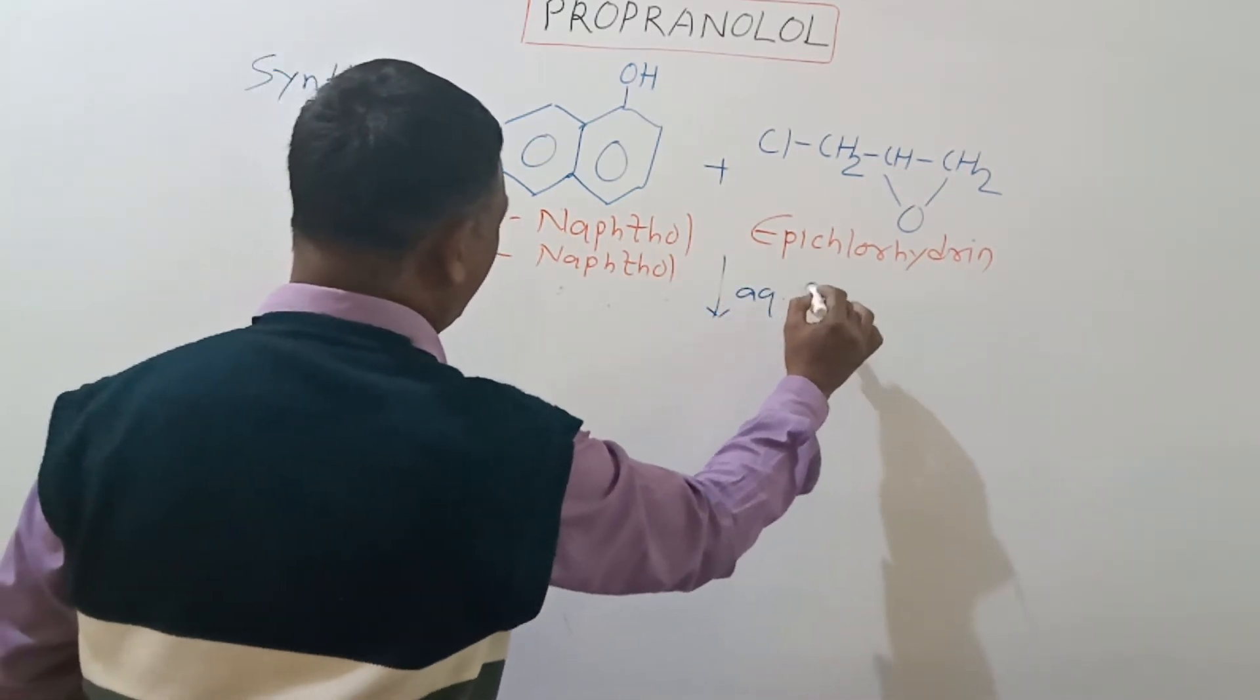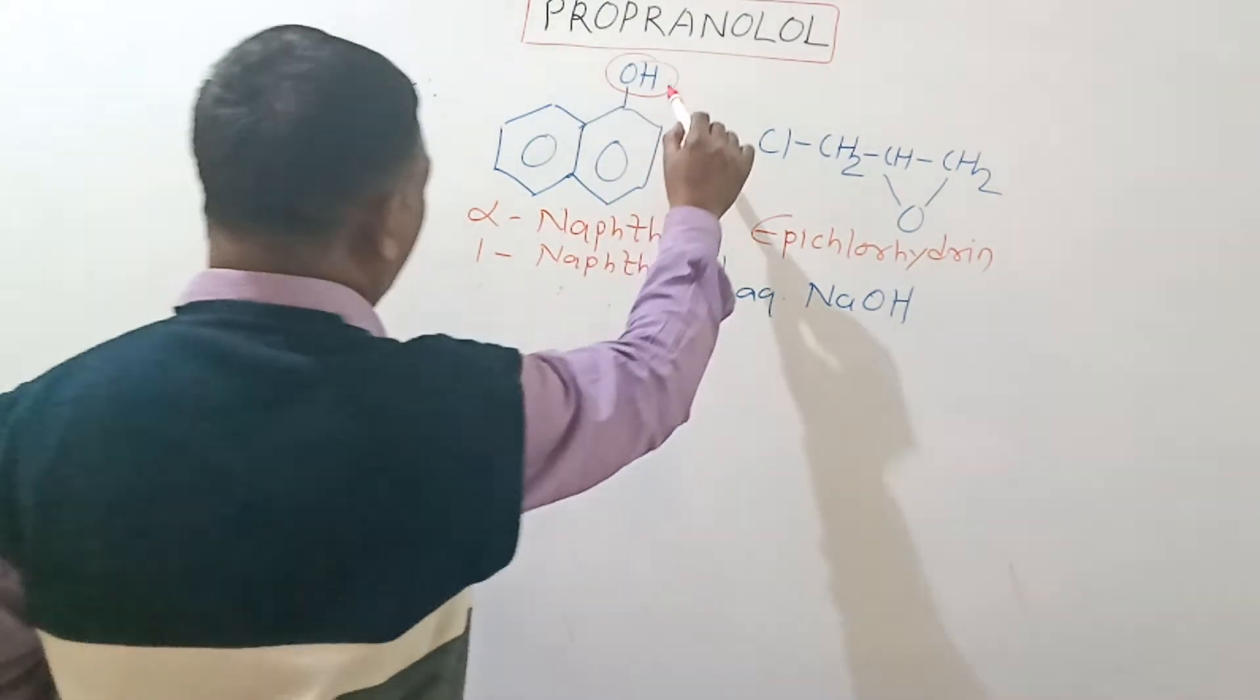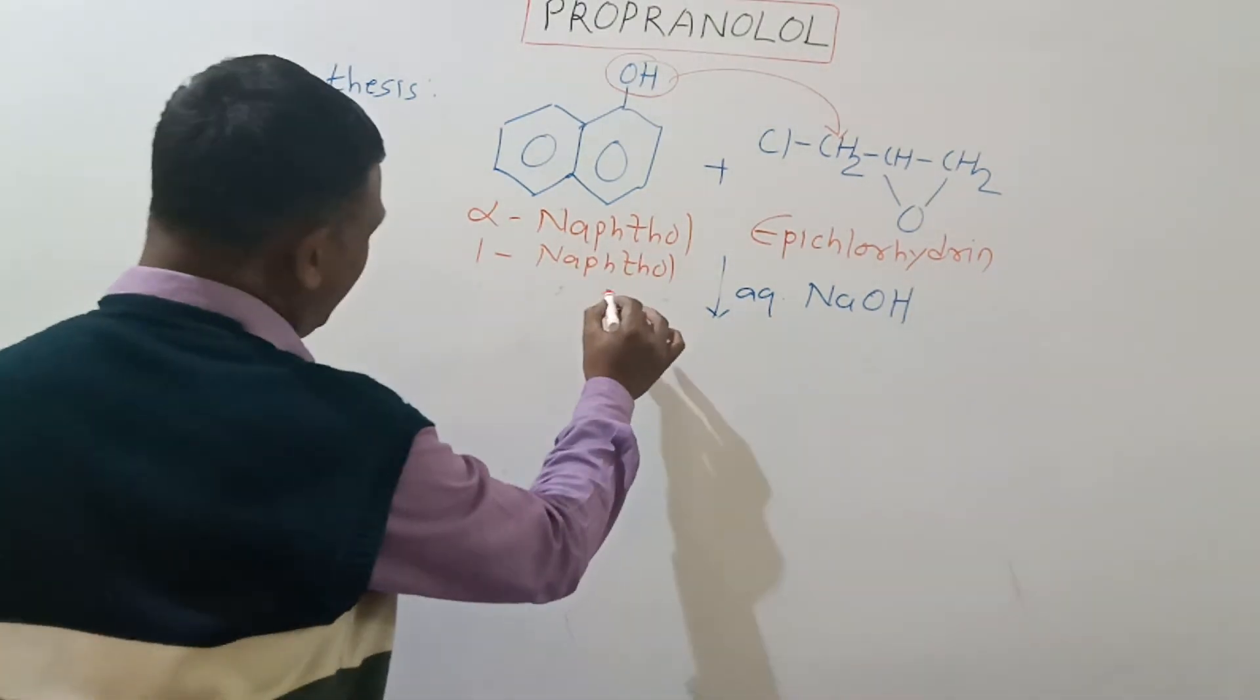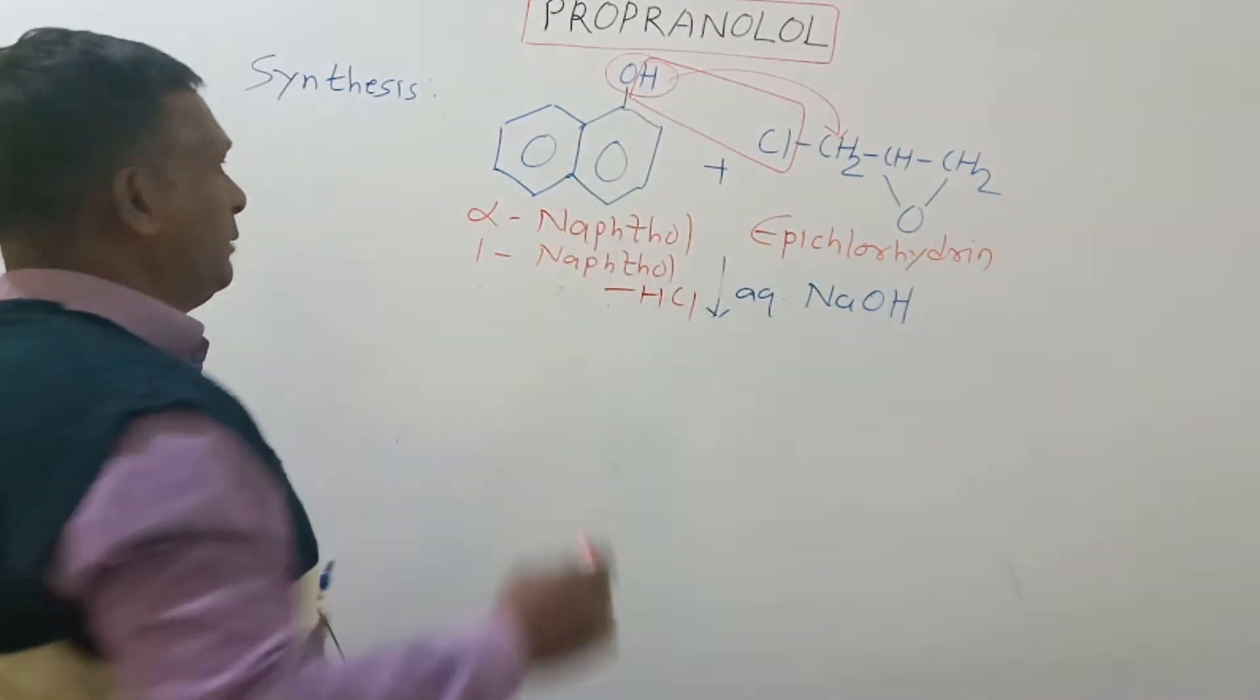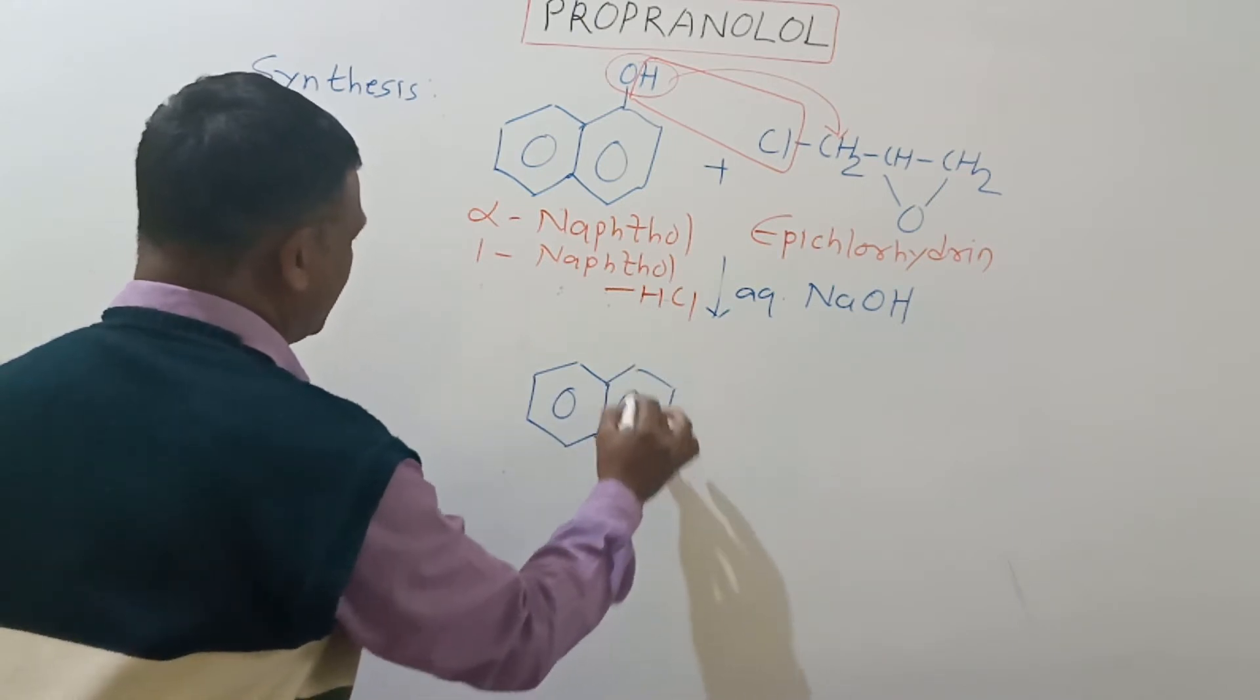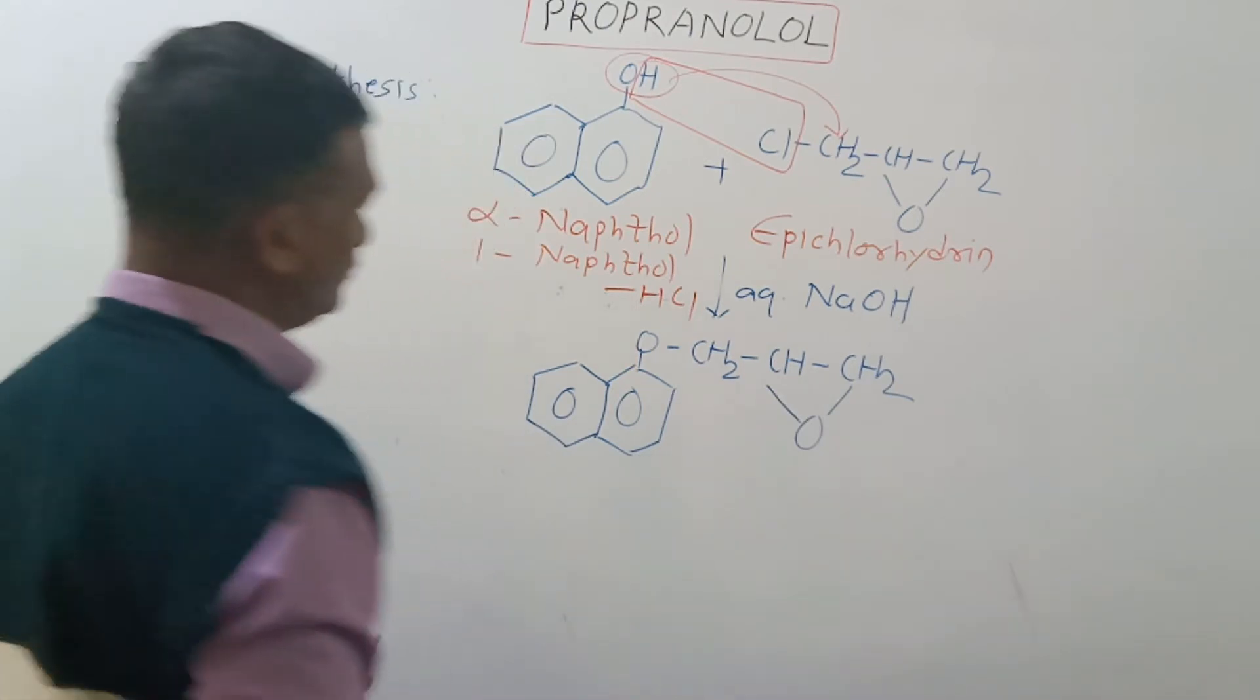The hydroxy group of this naphthol attacks on this carbon to bring about nucleophilic substitution reaction by release of a molecule of HCl. So the hydrogen and this Cl will be liberated out as HCl, and thus we get formation of this very important ether.